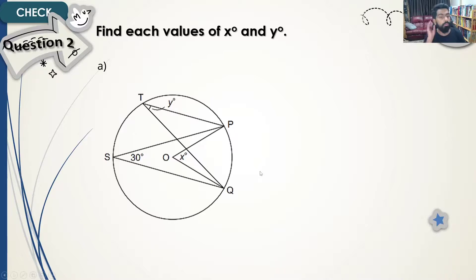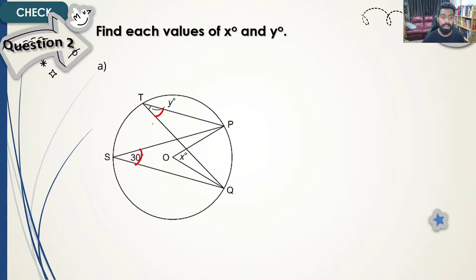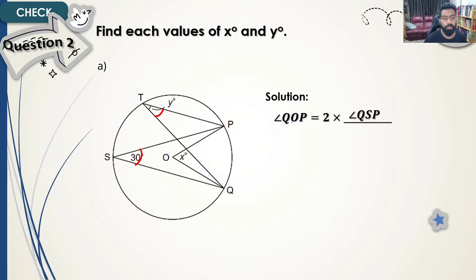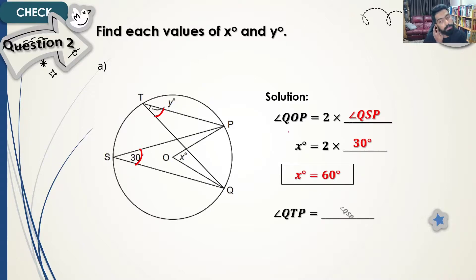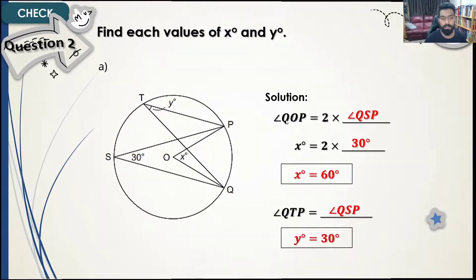For question 3, O is the center and angle POQ is the central angle. Angles PSQ and PTQ are both inscribed angles. Angle x equals 2 times 30 degrees, which is 60 degrees. By the inscribed angle property, angle QTP equals angle QSP, so angle y is also 30 degrees.